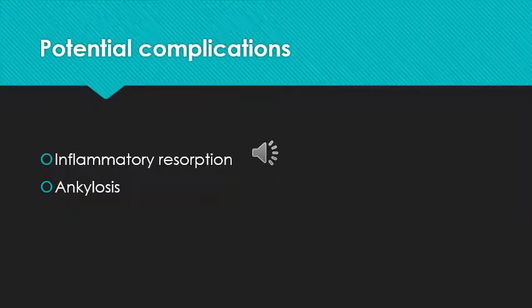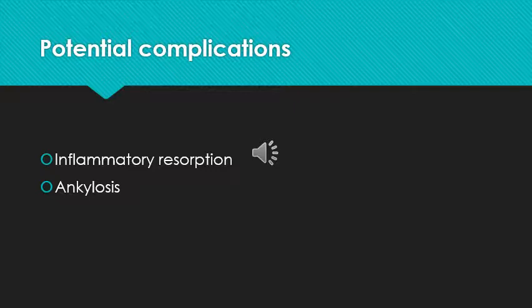However, no matter how many precautions are taken and how early the procedure is done, it may sometimes lead to potential complications like resorption — where part of the tooth may be lost — or it may even lead to ankylosis. Ankylosis refers to pathological fixing, where the tooth gets fixed to the underlying bone, causing difficulty when you tend to remove the tooth in future. These are the potential complications that can arise in an avulsed tooth.